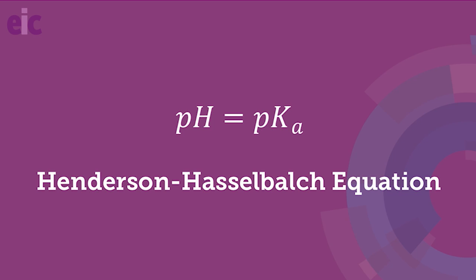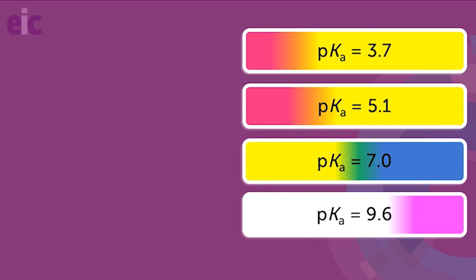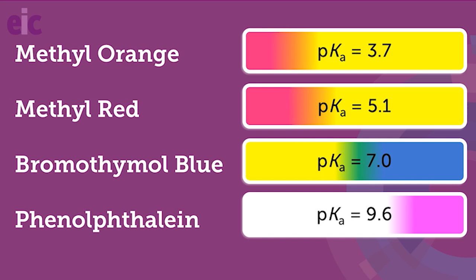Essentially, for any titration involving a weak base or a weak acid, you need to choose an indicator with a pKa that's close to the pH of the solution of the salt produced in the reaction.